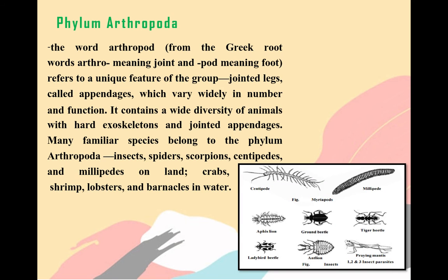The second type of phylum is Phylum Arthropoda. The word arthropod comes from the Greek root word arthron meaning joint, and pod meaning foot. It refers to a unique feature of the group — jointed legs called appendages — which vary widely in number and function. It contains a wide diversity of animals with a heart, exoskeleton, and jointed appendages. On land, we have insects, spiders, scorpions, centipedes, and millipedes. In water, we have crabs, shrimp, lobsters, and barnacles.